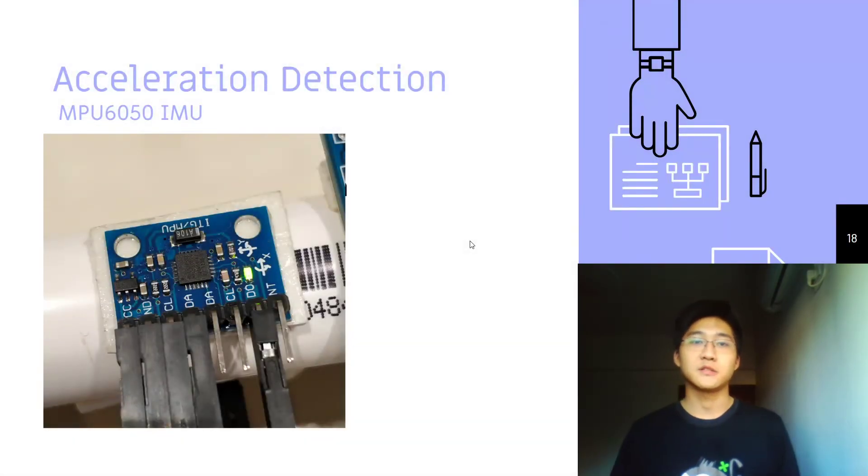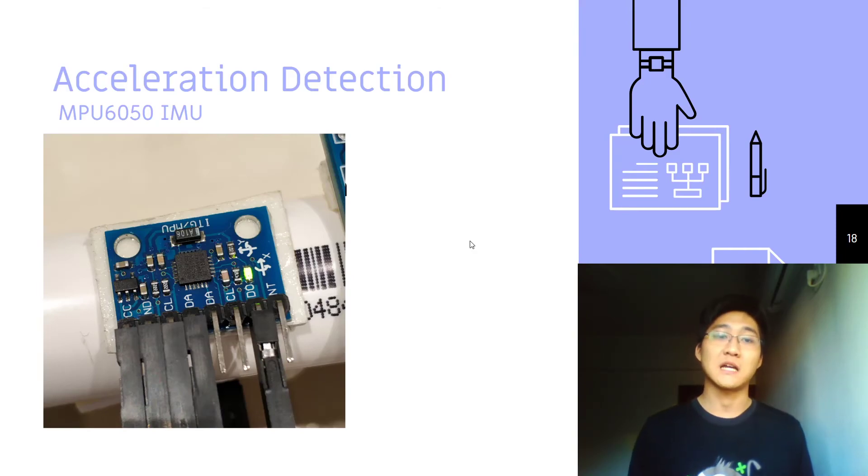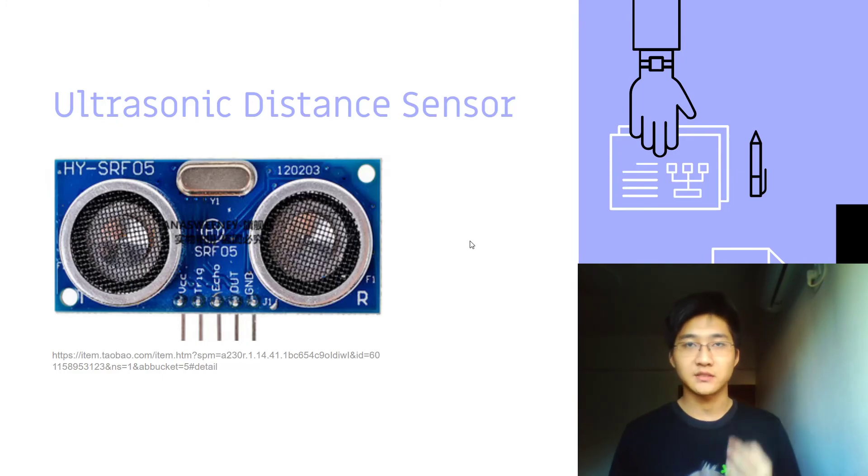So this is an acceleration detection sensor, MPU6050 IMU. It can detect the acceleration in six axes: X, Y, Z and alpha, beta, gamma axis. And then we have the ultrasonic distance sensor. It uses ultrasonic waves to bounce and then calculate the time difference, and then get a very accurate distance.